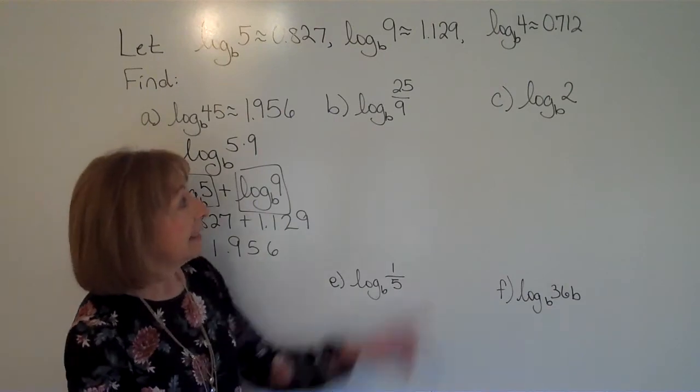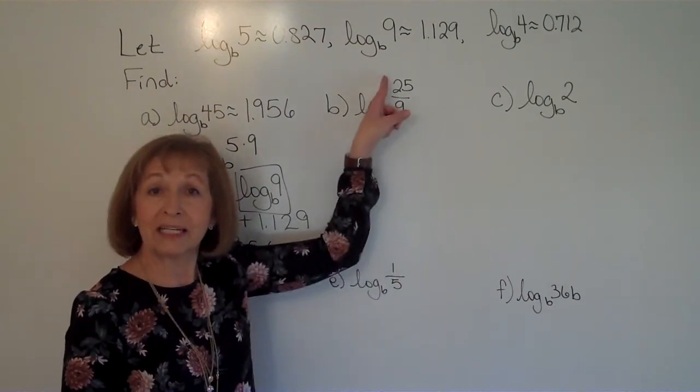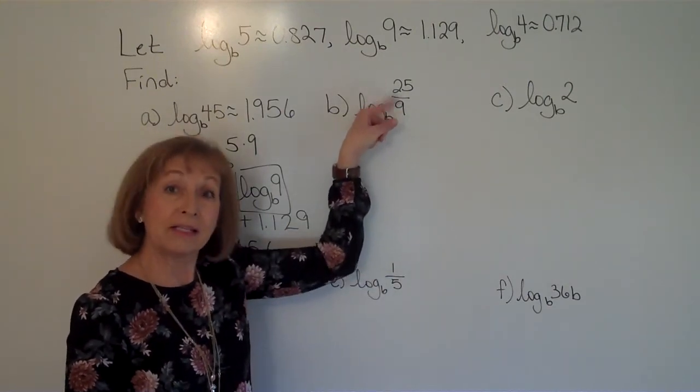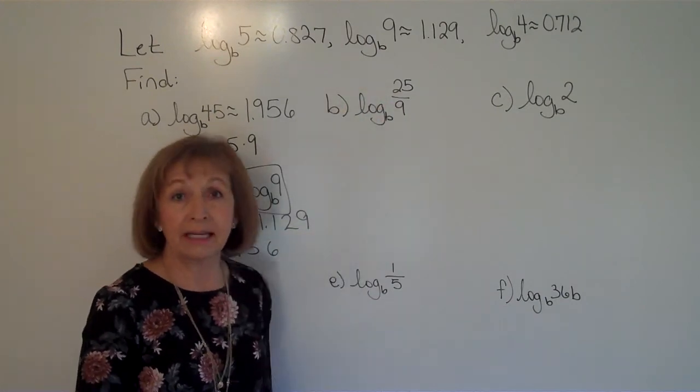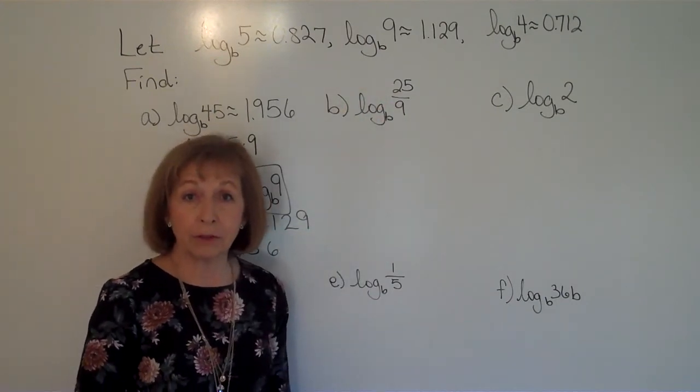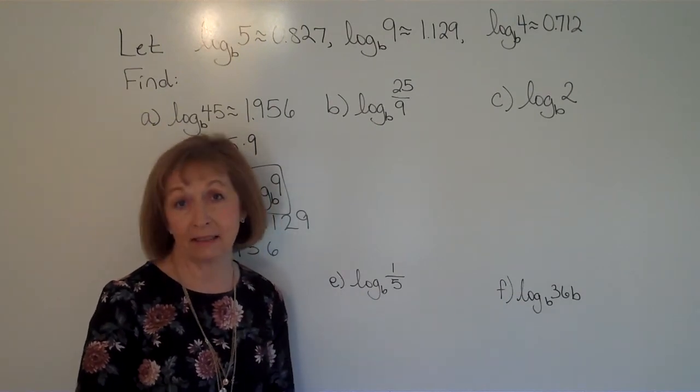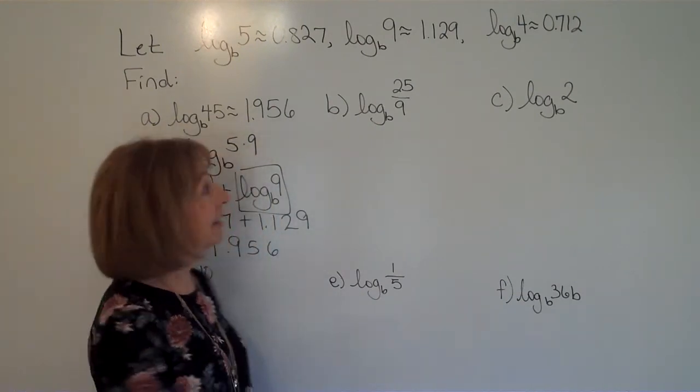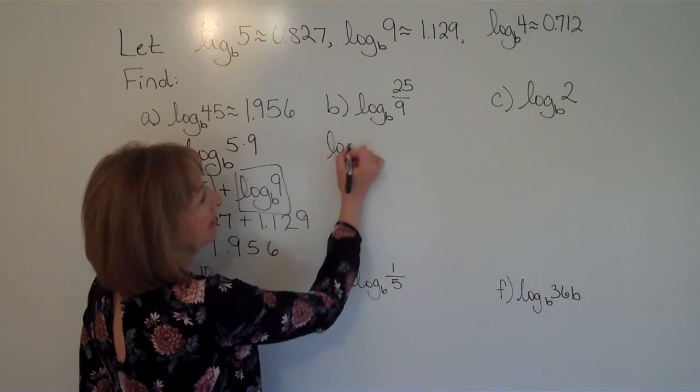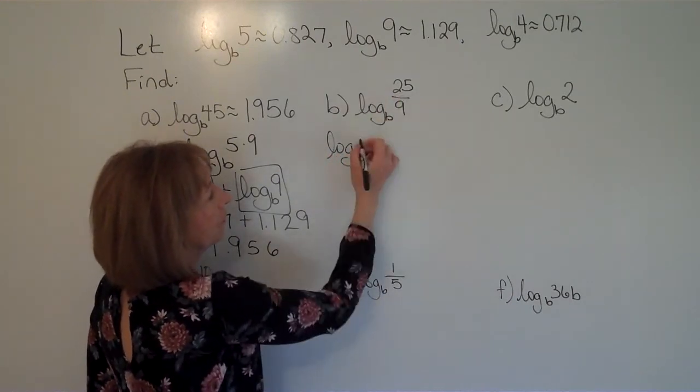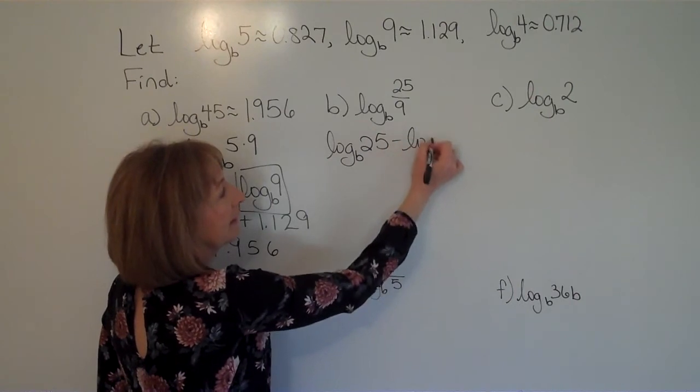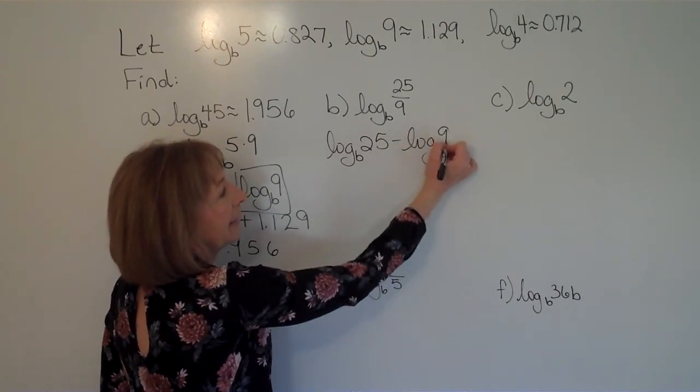Let's go to the next one. Here, it's the log base b of 25 ninths. Well, it's already written as a quotient. And remember, the logarithm of a quotient is the logarithm of the numerator minus the logarithm of the denominator.